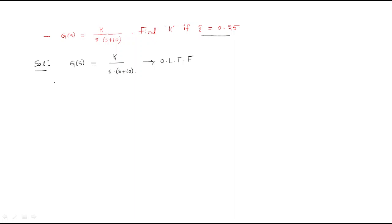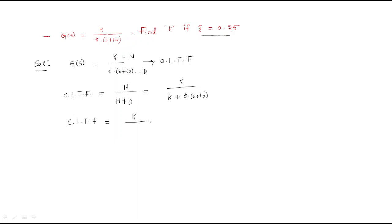In order to find K, we must have the closed loop transfer function. From the open loop transfer function we can write the closed loop transfer function in numerator over denominator form, that is numerator divided by numerator plus denominator. So the closed loop transfer function equals K / [s² + 10s + K].